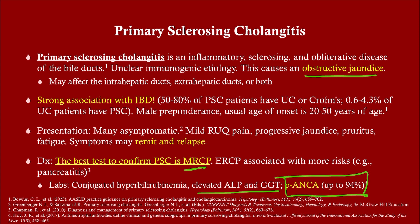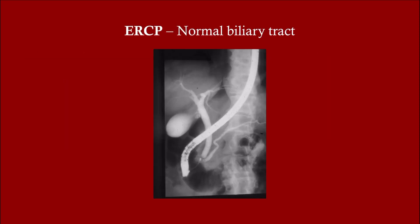The labs: when you have an obstructive picture you're going to have elevated ALP and GGT. You may also have elevated transaminases, but not as dramatically. p-ANCA is associated with sclerosing cholangitis — that's important to know. You can also see it associated with inflammatory bowel disease.